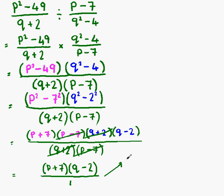That gives us p plus 7 multiplied by q minus 2. We don't need the 1 on the denominator. Now, you could go ahead and multiply this out to get another expression, but our answer is fine as it is. This is our final answer.